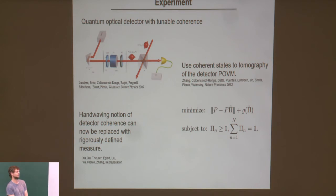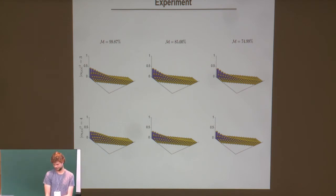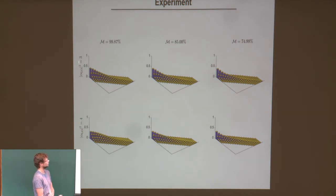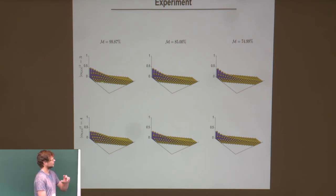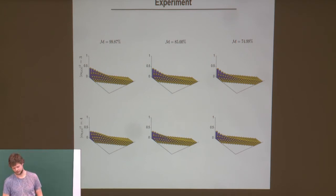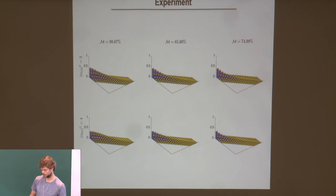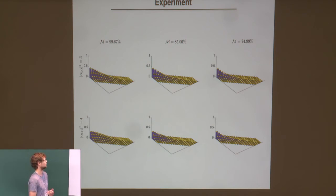The reason for doing this is that there have been several works about the coherence of detectors, and now we can put a rigorous number on how well these operations can detect coherence, replacing somewhat hand-waving notions from before. Here are some preliminary results. The detector depends on two parameters: the amplitude of the local oscillator and the mode overlap, which we consider at nearly 100%, 85%, and 75%. Using the tomography procedure, we reconstructed the POVM elements.